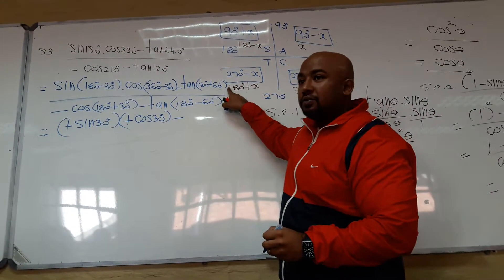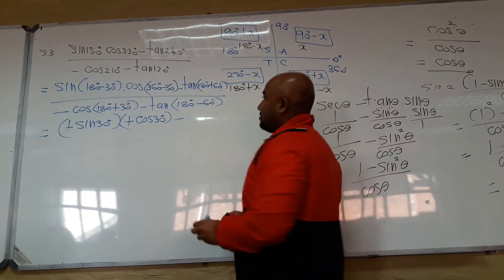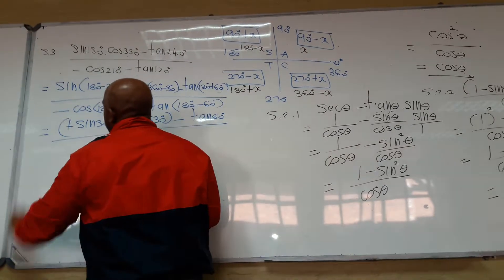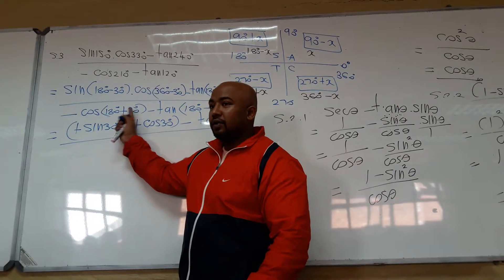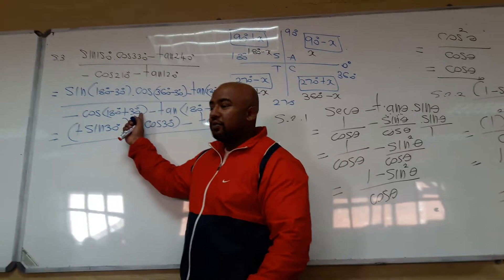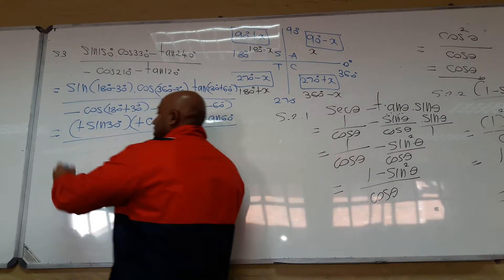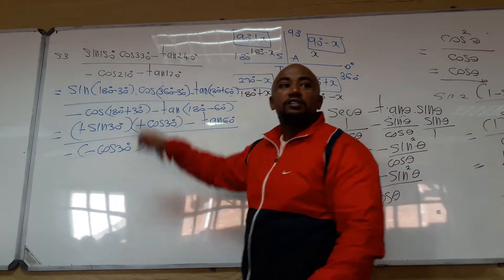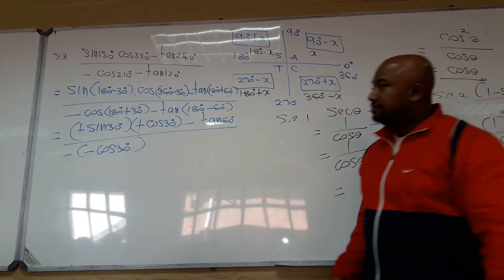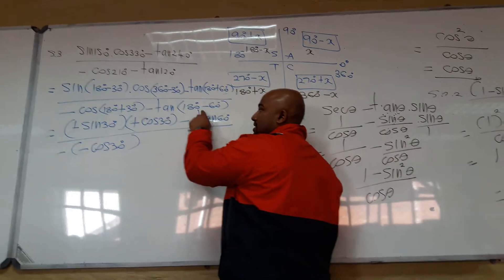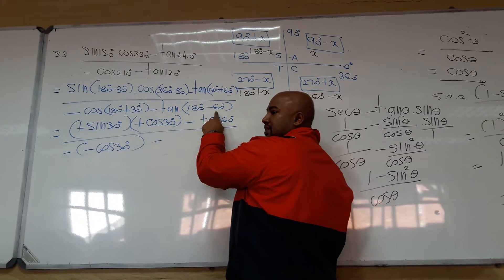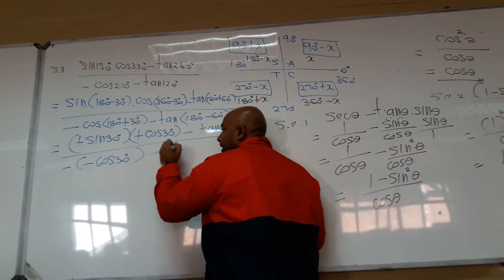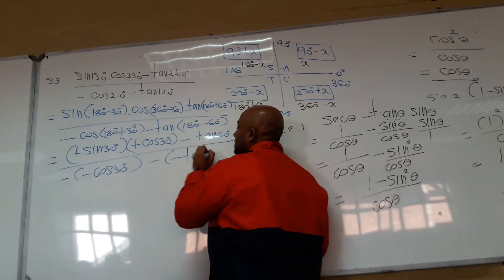This is third quadrant. Sine is positive. So, that will be tan of 60 degrees. Which quadrant is this? 180 plus. Third quadrant. Cosine is negative. So that is minus cosine of 30 degrees in brackets because of the negative sign that was there. Can you see that? Which quadrant is this here? 180 minus. Second quadrant tangent is positive or negative. So that is minus tan, 60 degrees.